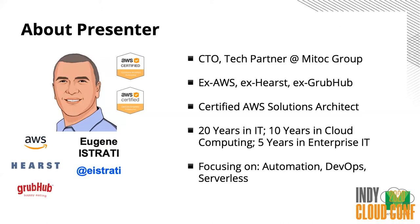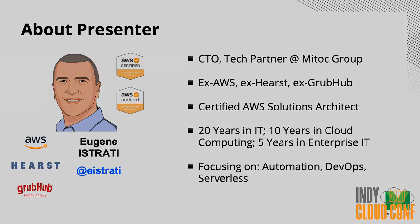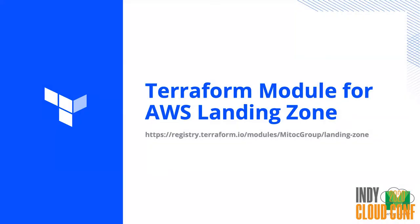My name is Eugene Estrade. I'm the CTO and technology partner at Microgroup. I used to work at companies like AWS, Hearst, and Grubhub. I focus lately — for the last five years or more — on automation, DevOps, and serverless in the enterprise world.